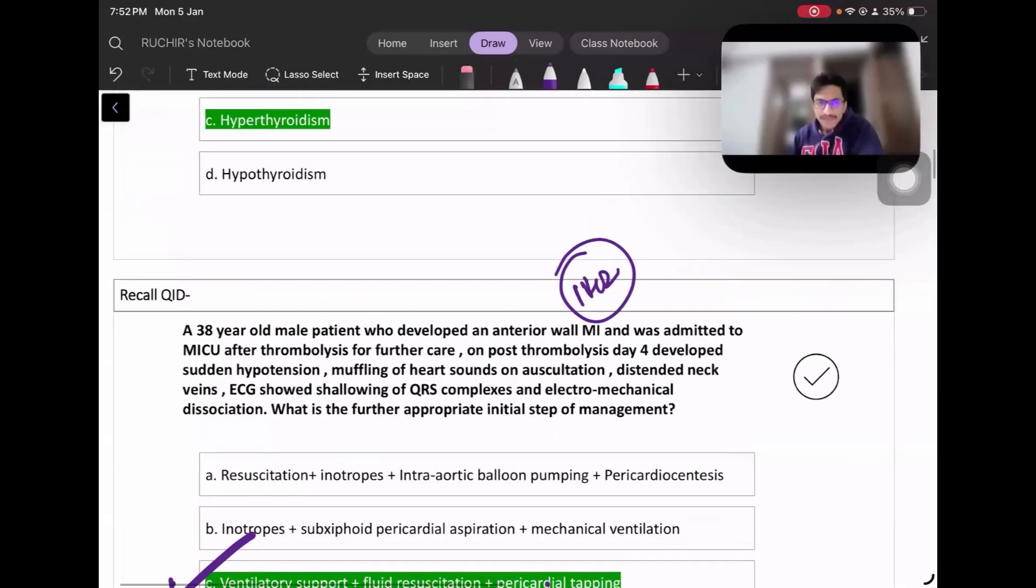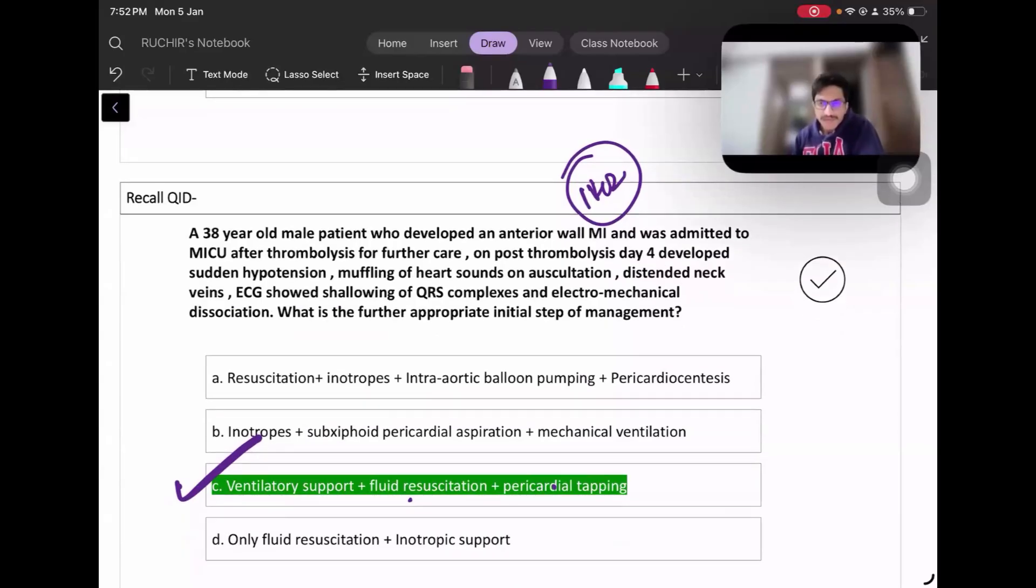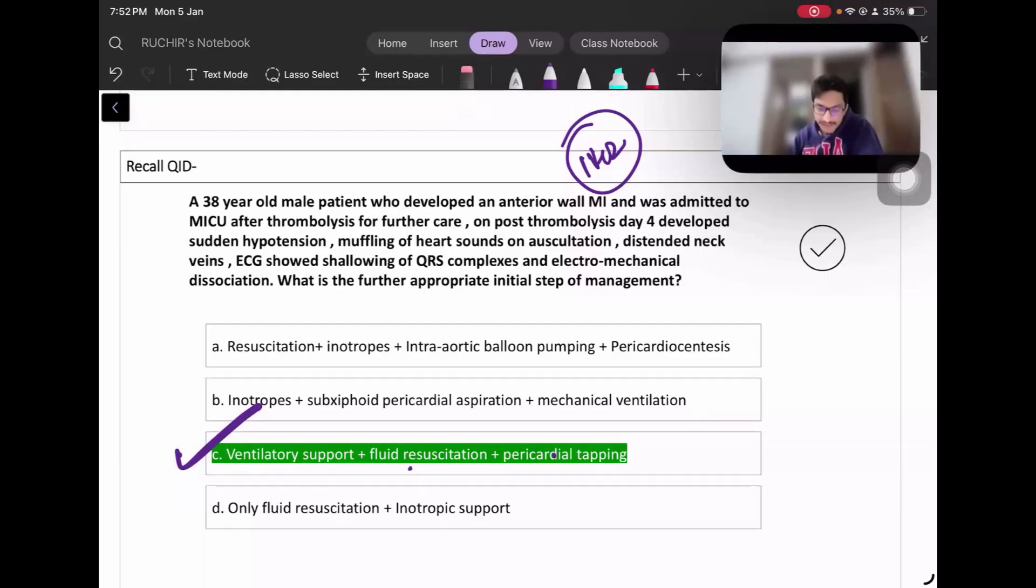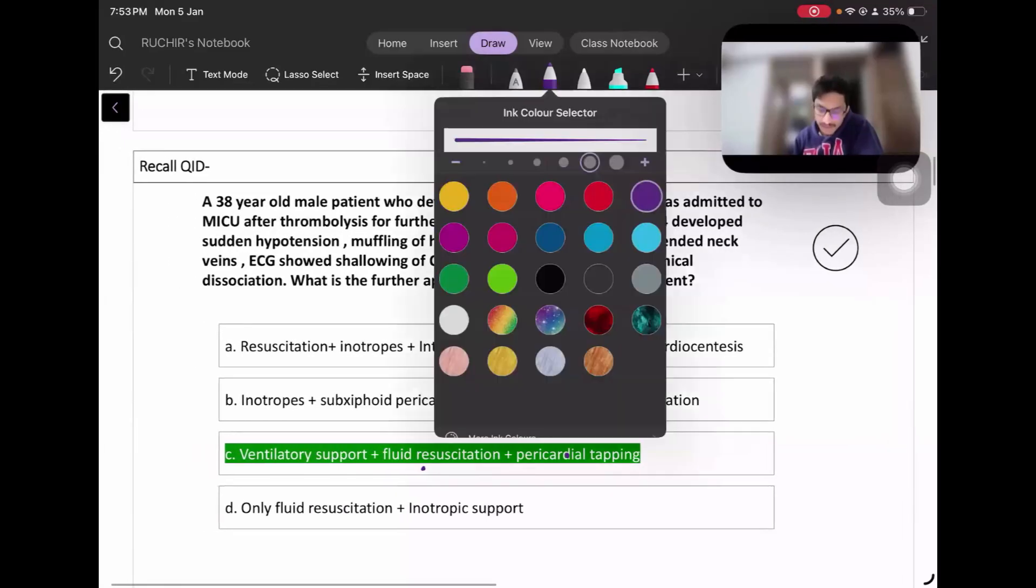For this question, can anyone help me out if somebody has doubts in the recall options? I know it's been one week after the exam, so it's very difficult to remember. Are the options okay in this? No pericardial tapping given? Can anyone help me out quickly?